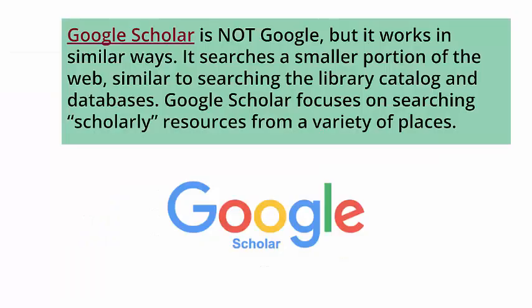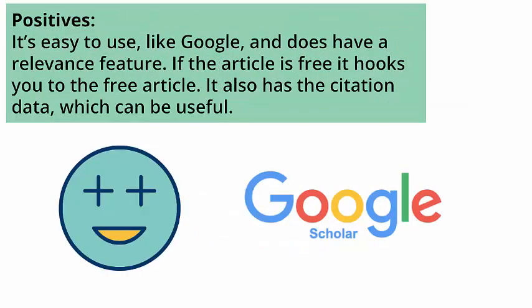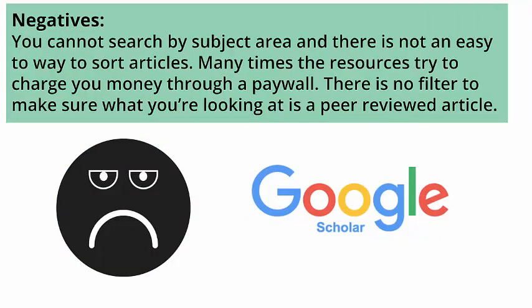Where does Google Scholar fit? Google Scholar is not Google, but it works in similar ways. It searches a smaller portion of the web, similar to searching the library catalog and databases. Google Scholar focuses on searching scholarly resources from a variety of places. Some positives about Google Scholar are that it's easy to use, like Google, and does have a relevance feature. If the article is free, it hooks you to the free article. It also has citation data, which can be useful. Some negatives are that you cannot search by subject area and there is not an easy way to sort articles. Many times the resources try to charge you money through a paywall.